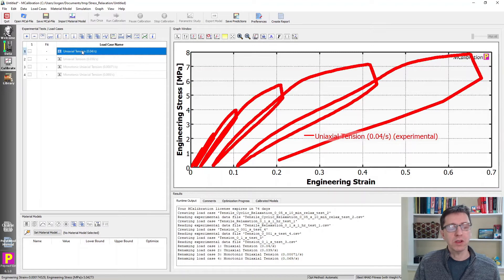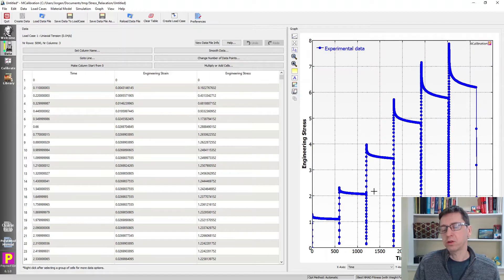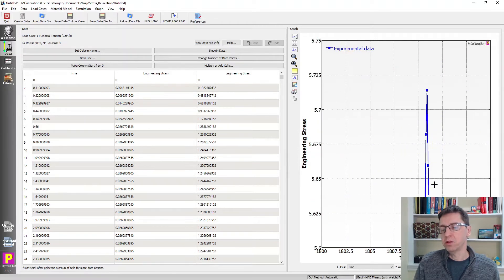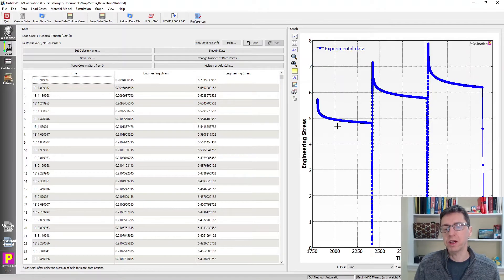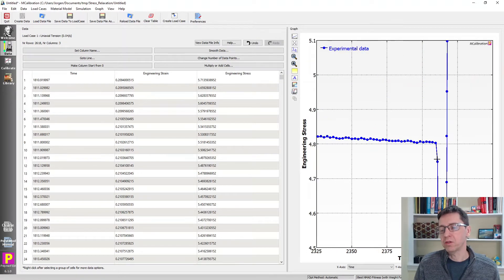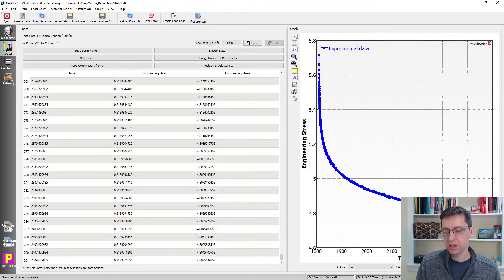I'm going to select this one and click on this icon here, edit experimental data. I'll show you how to extract the relaxation data from one of these six segments. Going to time versus stress, I'm going to zoom in and select the point before the first peak value. Control shift up arrow, delete key to get rid of all that. Then going to the end, control shift down arrow, delete. Here's the relaxation data for that particular segment.